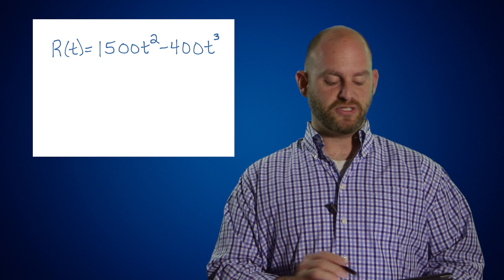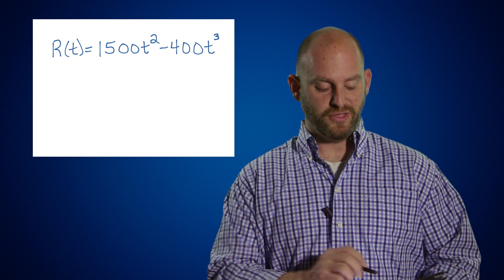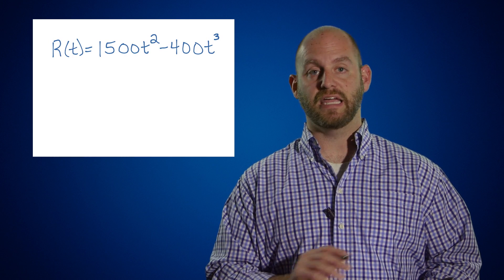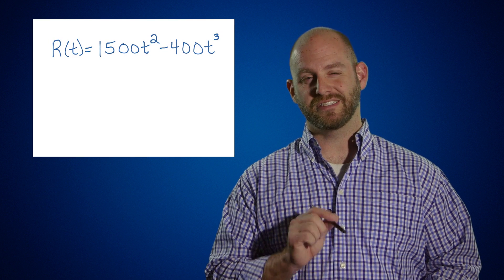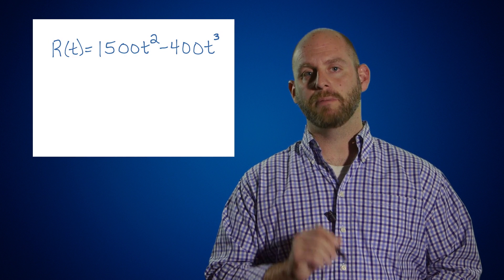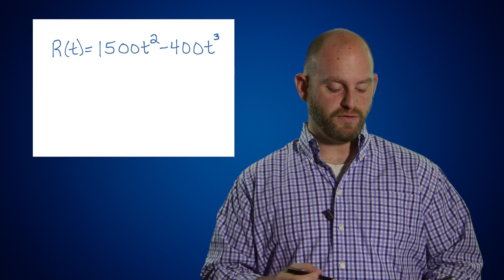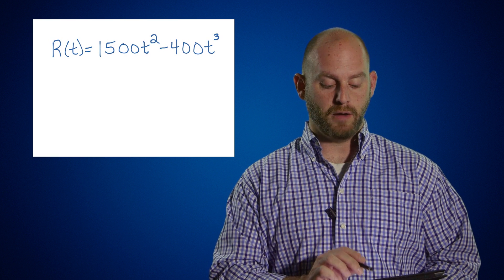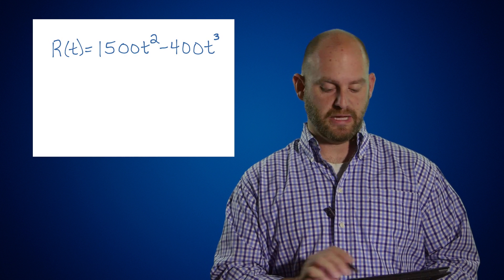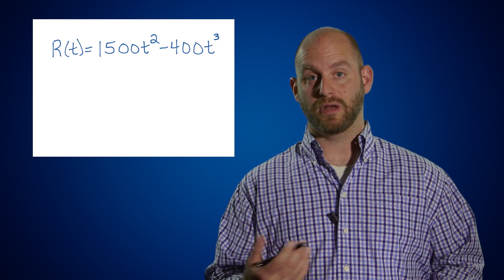R of t is equal to 1500t squared minus 400t cubed. This equation tells us that at any time between five o'clock and eight o'clock that evening, we can figure out exactly how many people are entering our concert hall. For example, at one hour into allowing people in, we get the value of 1,100, which stands for 1,100 people per hour entering in the first hour.